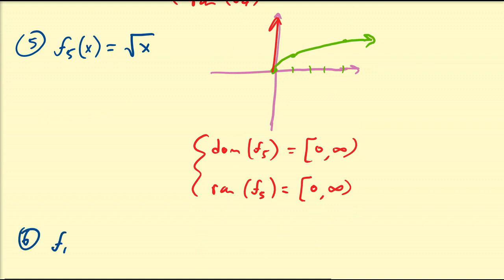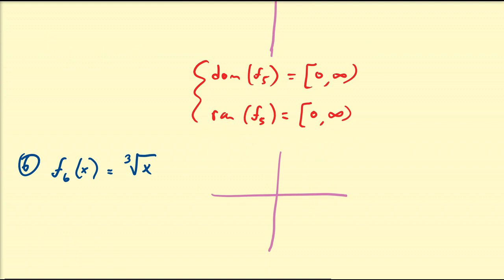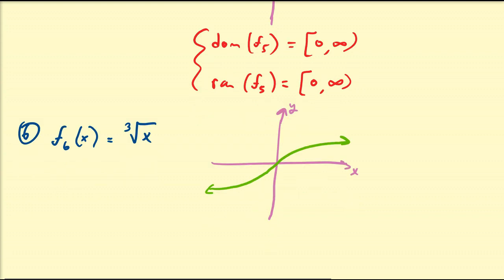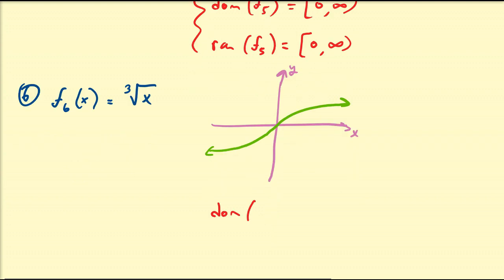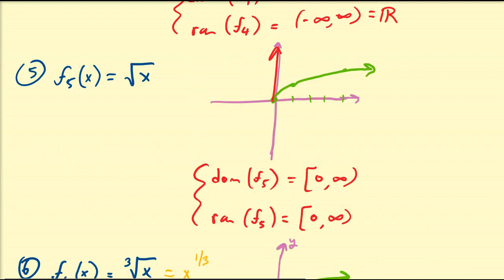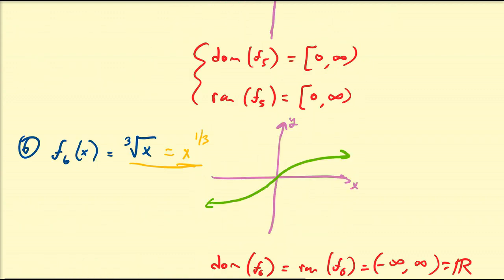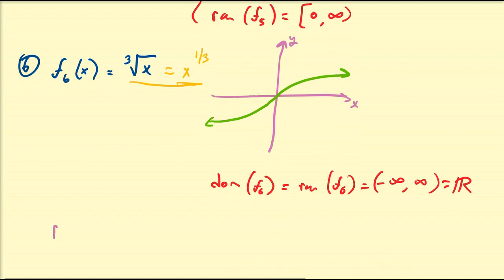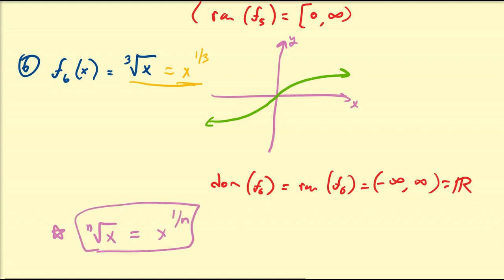The next function, f₆(x), is the cube root of x. Taking the cube root — the opposite of cubing — gives a graph that looks like a stretched S-curve. The domain and range of f₆ are both all real numbers. As a side note, the cube root of x is the same as x to the 1/3 power. In general, the nth root of x equals x to the 1/n power — this is the transformation between rational exponents and radicals, which we'll discuss in detail later.